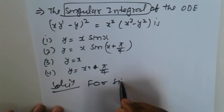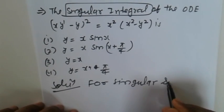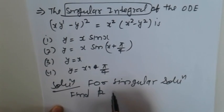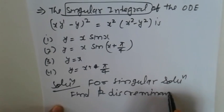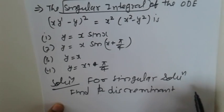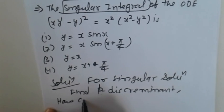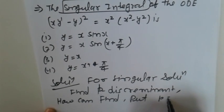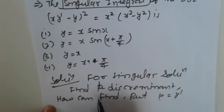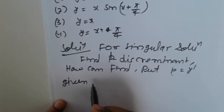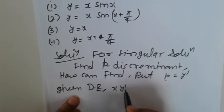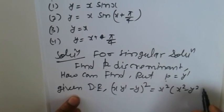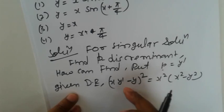For the singular solution, find the P discriminant. Put y dash equal to P. So the given differential equation is: x times y dash minus y, whole square, equal to x square minus y square.